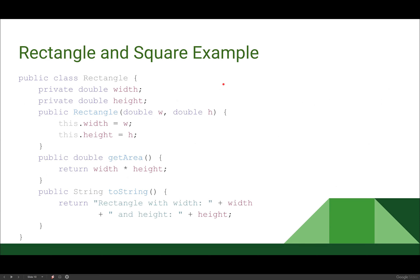Let's look at an example with two classes: Rectangle and Square. Our Rectangle class has width and height as instance variables. The constructor fills those in, getArea returns width times height, and toString returns a string saying it's a rectangle with the given width and height — a very simple implementation.